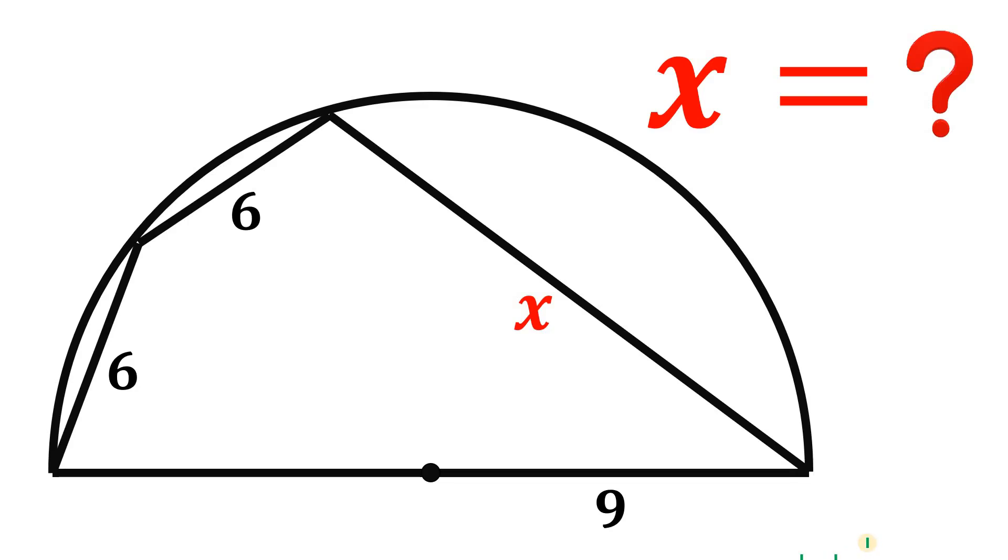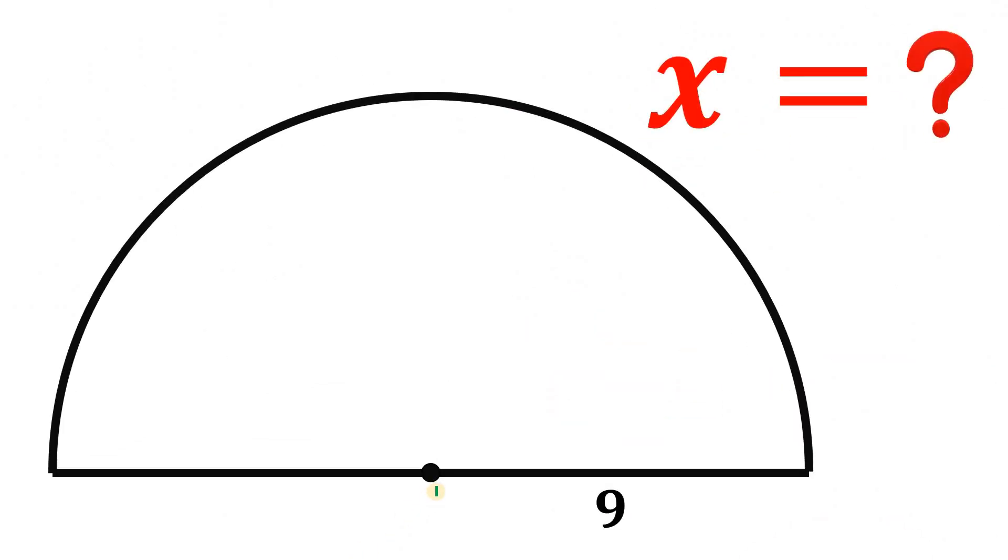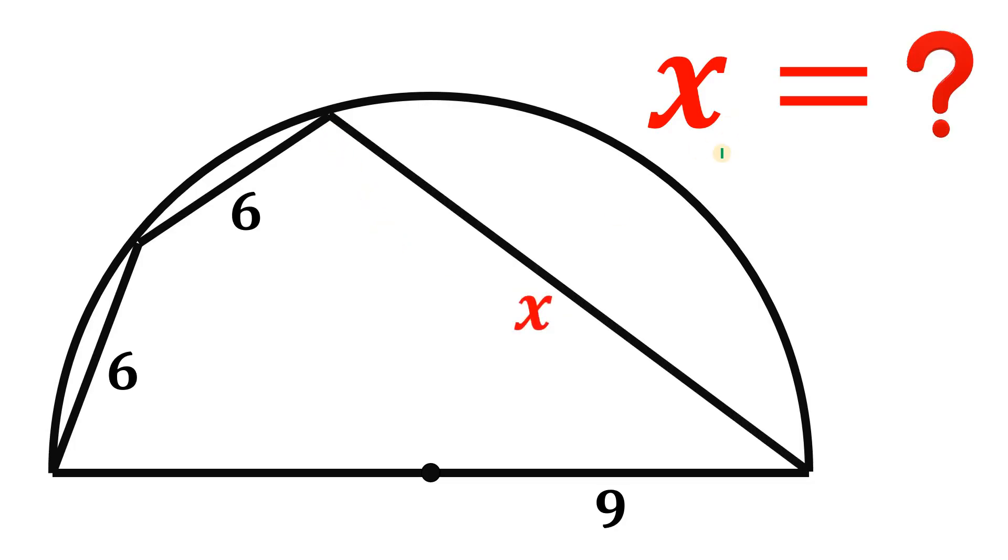Can you solve this geometry challenge? Here's the question: given the semicircle with a radius of nine units, now let's draw two congruent chords with a measure of six units.